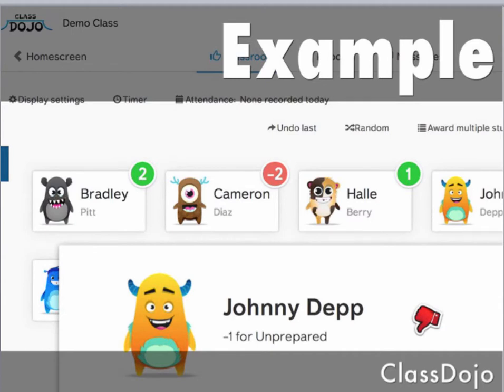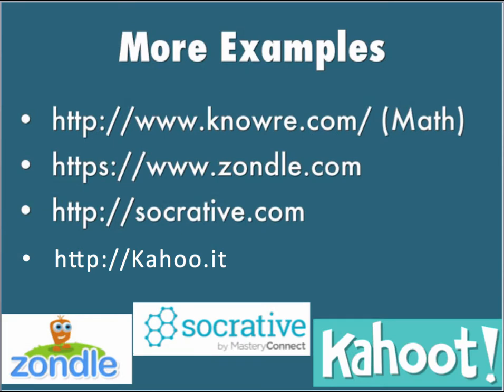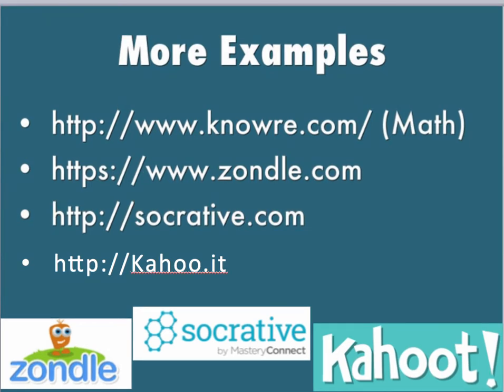Here is an example of using gamification for classroom management. Using ClassDojo, you can assign points to students for good classroom behavior or deduct points for unacceptable classroom behavior. There are more examples of gamification — you can use Zondo, Socrative, or Kahoot to engage students in interactive quizzes or polling. These tools can be used to help students achieve quick results through gamification.